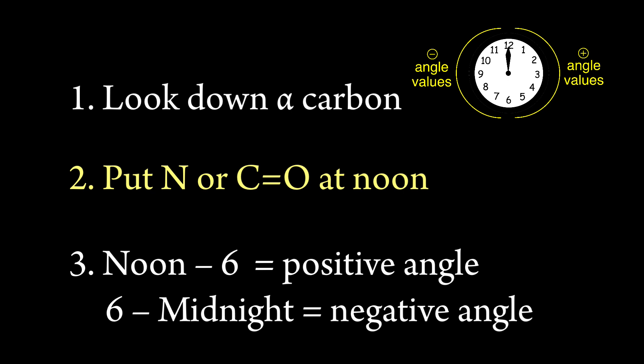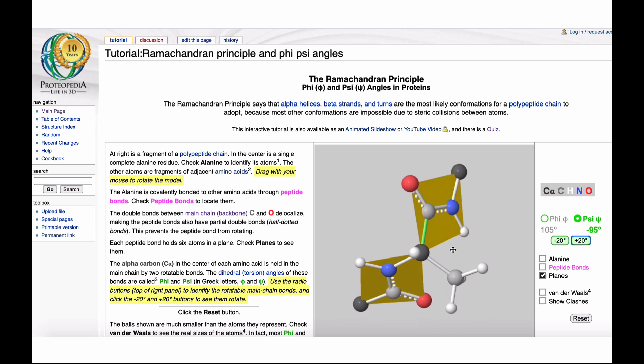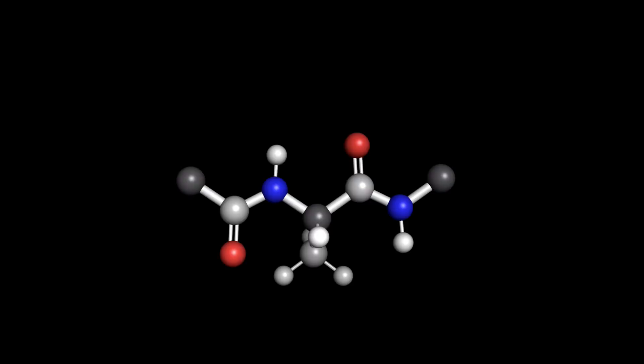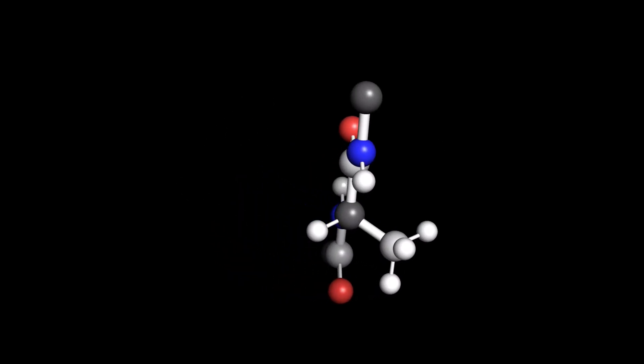I hope this tutorial has helped you begin to make sense of Φ and ψ angles and Ramachandran plots. It's one thing to watch me demonstrate this, and another to play around with a 3D model of your own. So, I encourage you to check out the video description, where there's a link to an amazing page on the website Proteopedia, where you can explore Φ and ψ angles for yourself. And if you find this challenging, you're not alone. This type of detailed structural analysis is difficult at first, but gets easier with practice. Happy modeling!